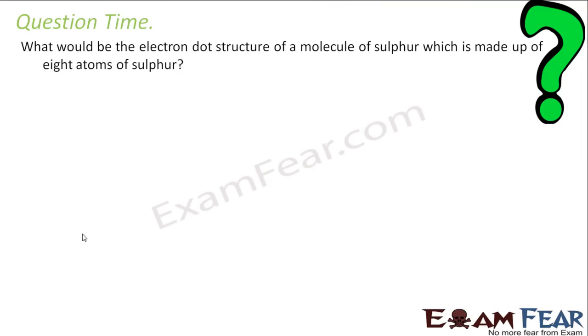What would be the electron dot structure of sulfur which is made of 8 atoms of sulfur? Please note this. This guy is a little bit of a tricky part. But sulfur if you see, it has 6 electrons in valence shell. That means it needs 2. Right. It needs 2. And it says that it is made of 8 sulfur atoms.